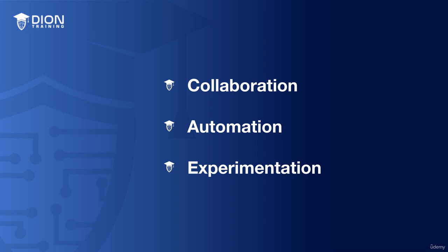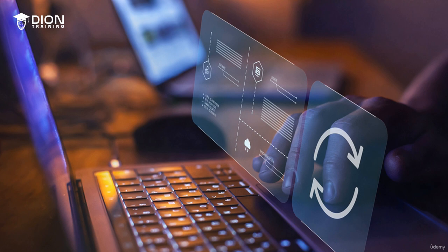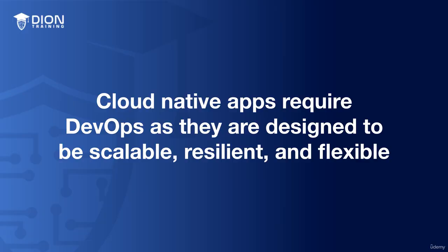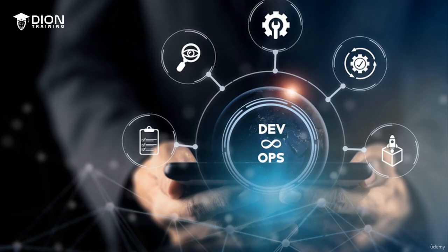In the context of cloud-native applications, DevOps can really help to ensure the applications are being deployed and managed in a way that is both efficient and effective. For example, by automating the deployment process, organizations can reduce the time and effort required to deploy updates and changes to their applications. Additionally, by using continuous integration and continuous delivery, organizations can ensure that their applications are being updated and deployed quickly and efficiently without sacrificing quality or stability. Cloud-native applications require DevOps because they are designed to be scalable, resilient, and flexible, and to take advantage of the elasticity and scalability of the cloud. DevOps provides the framework for collaboration between development and operations teams, as well as a set of practices designed to improve the speed, efficiency, and reliability of software delivered.